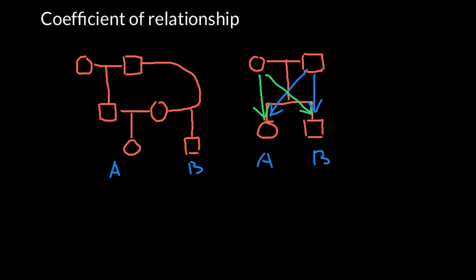Each child has 50% of the genome from the mother and 50% of the genome from the father. Children are related to their parents by 50%. In this case, because these are not genetically identical twins, this brother and sister would also be genetically related to each other by 50%, and our calculations would be as follows.